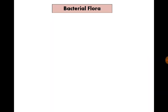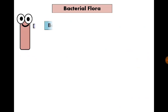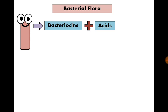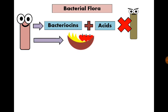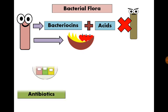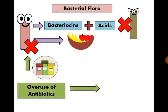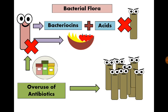The second factor is the beneficial bacterial flora. They live in the intestine, skin, and mucous membranes. They produce bacteriocins and acids that destroy bad bacteria, and they also consume nutrients so that bad bacteria entering our body will not find food. The importance of bacterial flora is seen with overuse of antibiotics that kill them, which can lead to overgrowth of bad bacteria and serious conditions like pseudomembranous colitis.